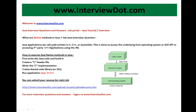Java applications can call code written in C, C++, or assembler. This is done to access the underlying operating system, some GUI application, or accessing a third-party application written in C++ using the JNI. From the Java code, you can talk to a C++ application — there is a facility in Java where you can call from Java code to C++ code.